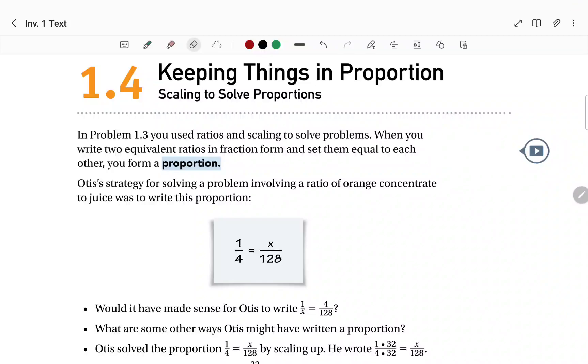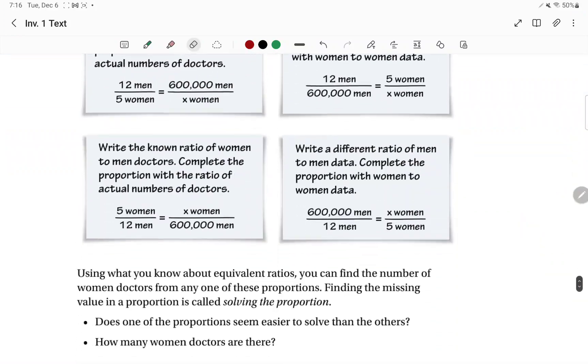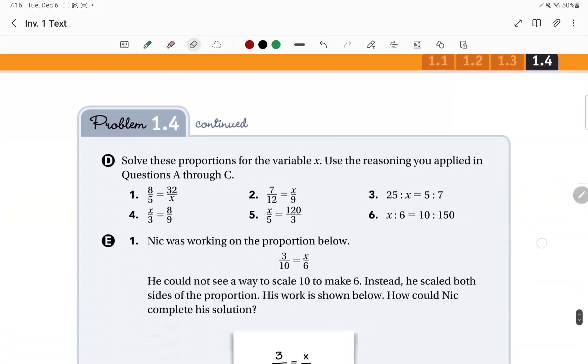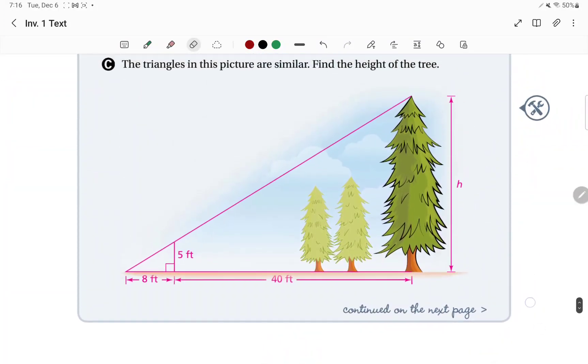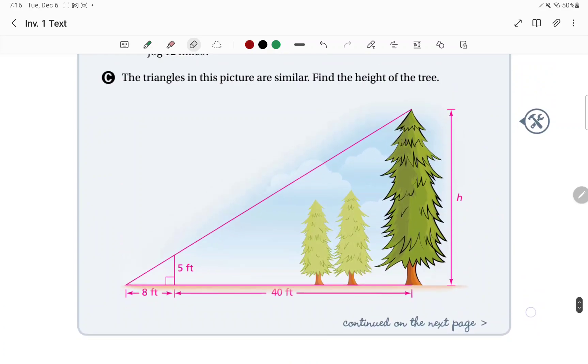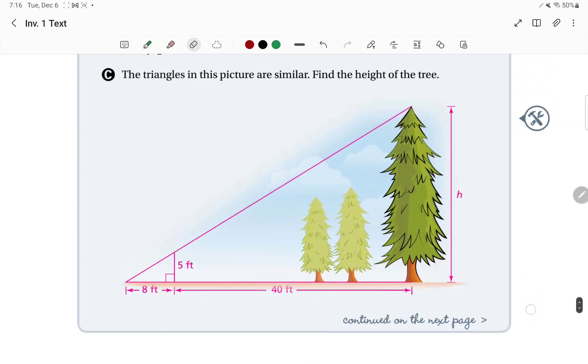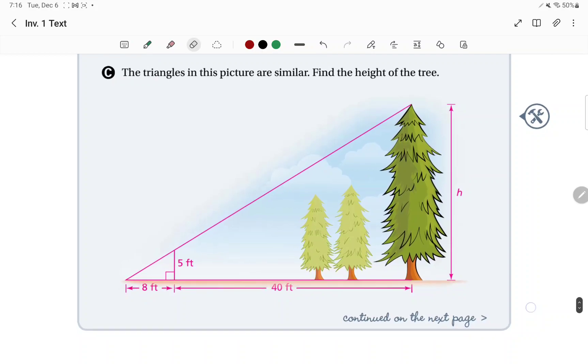Let's take a look at part two of keeping things in proportion, scaling to solve proportions. In part one, we went over all this, went over part C, setting up those proportions for those similar triangles. Nothing new there. We did that in the last unit.